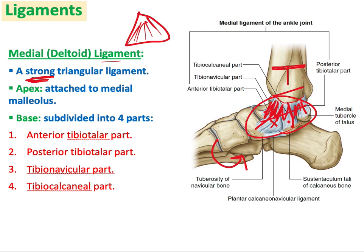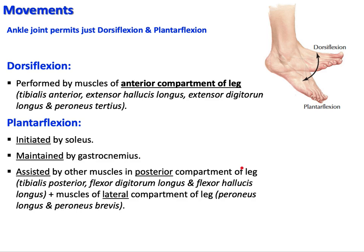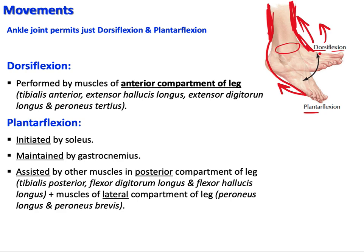The movements at the ankle joint — because it is a hinge joint — are flexion and extension. At the ankle we specifically call these dorsiflexion and plantarflexion. To dorsiflex the foot (move it upward), the muscles of the anterior compartment of the leg contract. To plantarflex the foot (move it downward), the muscles of the posterior compartment of the leg contract.